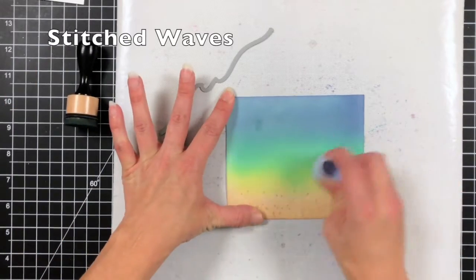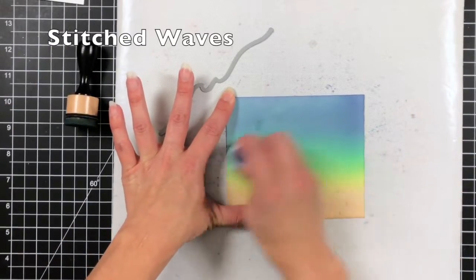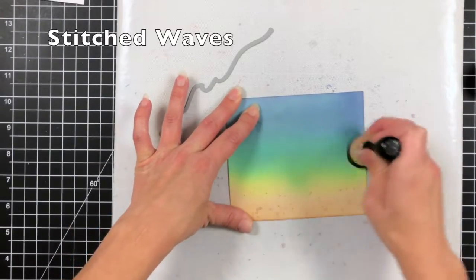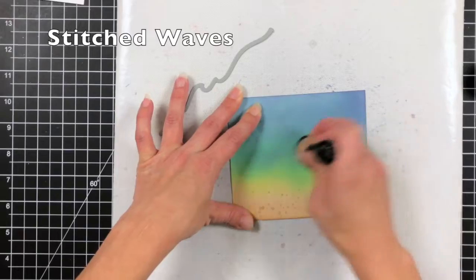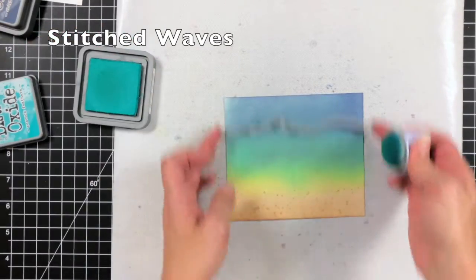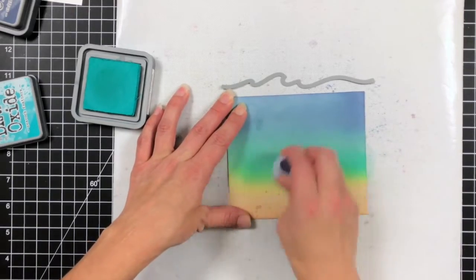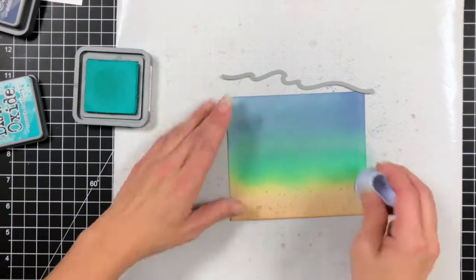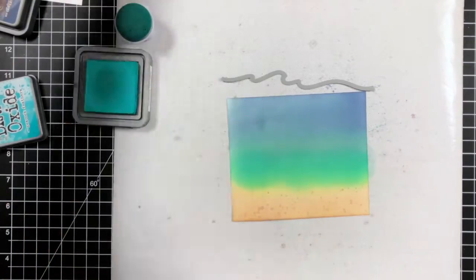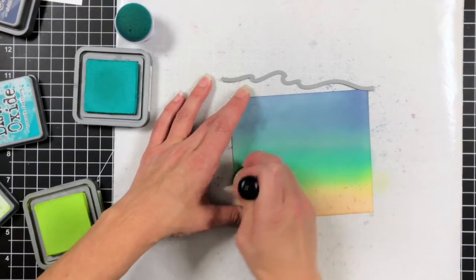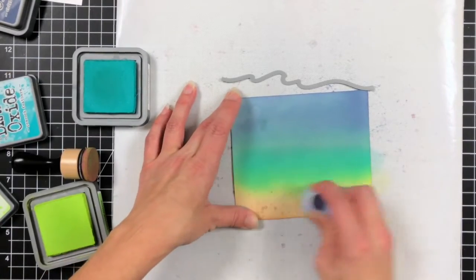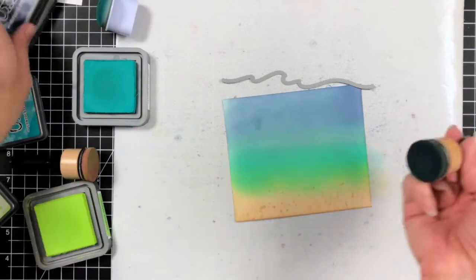So this is the stitched waves die that I'm going to be using and you can see I didn't need a good top half of that sheet. So what I'm doing is I'm bringing that chipped sapphire down further. I'm going to be bringing in that twisted citron and peacock feathers and bringing that down towards the sea bottom more and just kind of blending those out making sure I don't have any harsh lines.